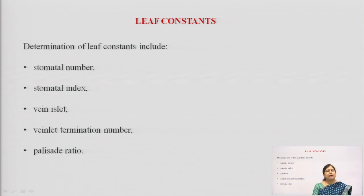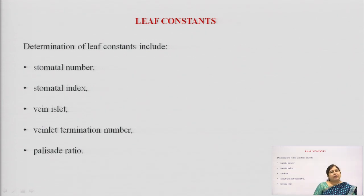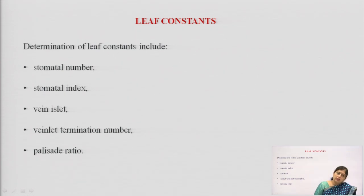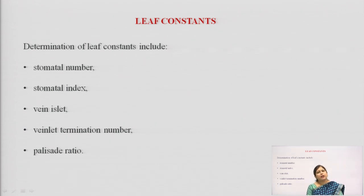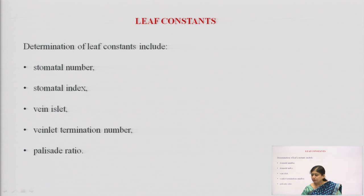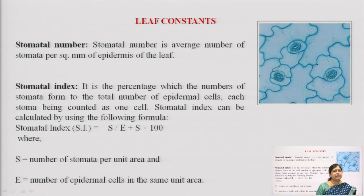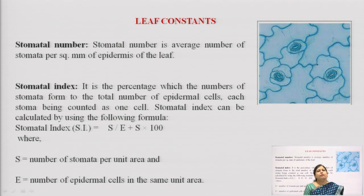This is the first part of microscopic studies. The second part is studying the leaf constants, which is specifically for drugs that are leafy in nature. Since the majority of herbal drugs use leaves as the drug, this part of the study is important. Being a pharmacognosist, you should know these terminologies and how the studies are performed.